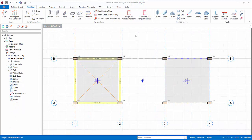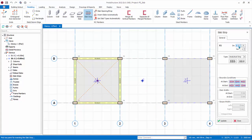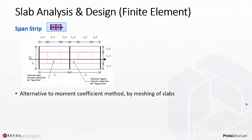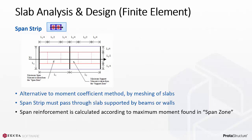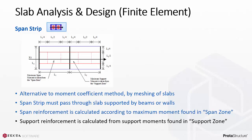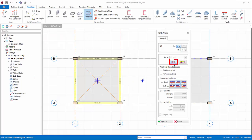Click on the Slab Strip icon. Start with direction X. Since we want to use the finite element slab design method, change the type to FE Strip. For finite element strip, there are two types: Span Strip and Fixed Band Strip. Span Strip is the alternative to the moment coefficient method by meshing of slabs. Span Strip must pass through a slab supported by beams or walls — for example, one beam at the left side, then one slab, then one supporting wall at the right-hand side. Span reinforcement is calculated according to the maximum moment found in the span zone. Select Span Strip since we will be cutting the slab strip for the beam slab model.